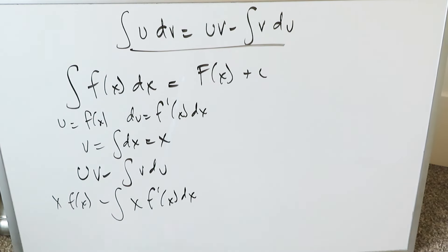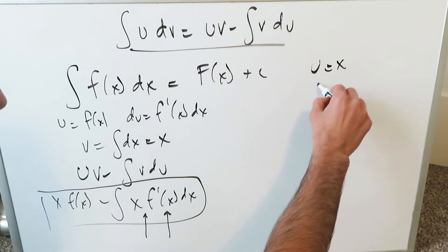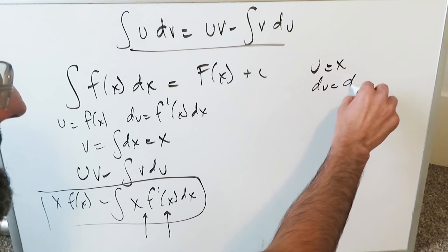You can't stop right here. You have to run this through another round of integrating by parts, and you can. Here's your u. Here is going to be your v. u is equal to x, du is equal to the derivative of that, which is just dx.